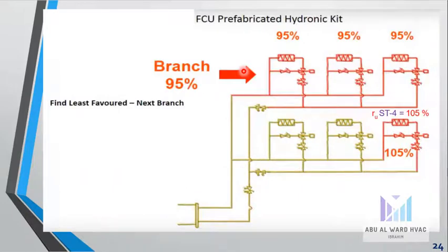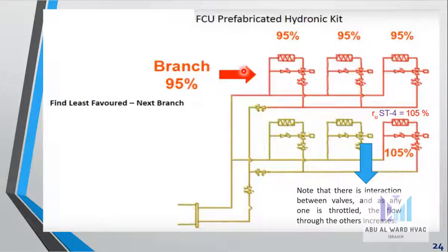We will go to the next least favored circuit in the next branch. Note that there is interaction between branches: when any one is throttled, the flow through the others increases. In this circuit we have 105% because of throttling the previously balanced circuit.